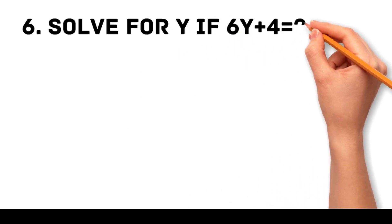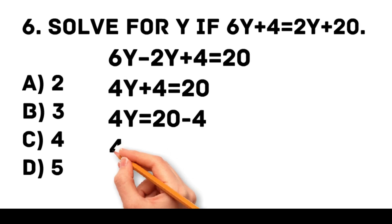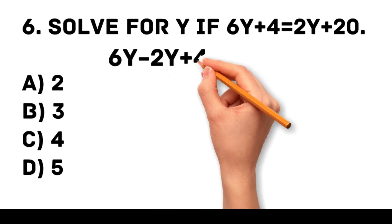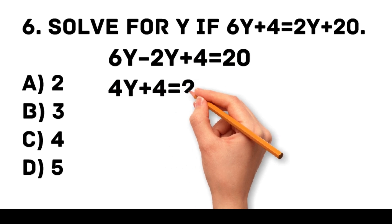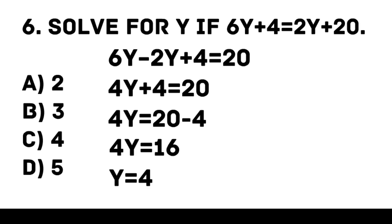Question 6. Solve for y if 6y plus 4 equals 2y plus 20. A. 2. B. 3. C. 4. D. 5. Answer: C. 4. First, get all y terms on one side. 6y minus 2y plus 4 equals 20. 4y plus 4 equals 20. 4y equals 16. Finally, divide both sides by 4. y equals 4.